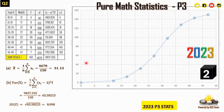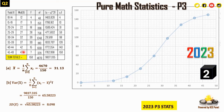We plot the midpoints against the cumulative frequencies, starting from the origin (0, 0). Points include (12, 4), (17, 13), continuing to (47, 150). Joining the points gives an ogive — a cumulative frequency curve with a characteristic S-shape.